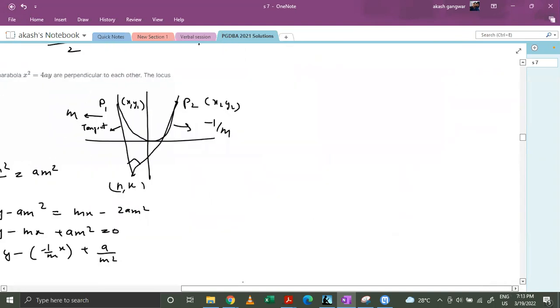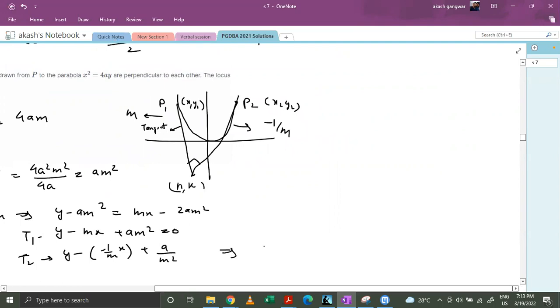So basically this comes out to be equal to 0. This comes out to be m square y plus mx plus a equals to 0.